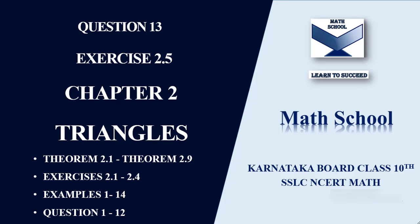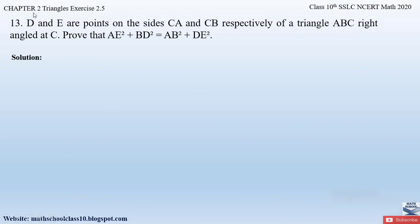Now let us begin. Question number 13 from exercise 2.5, chapter 2 Triangles states: D and E are points on the sides CA and CB respectively of a triangle ABC, right-angled at C. Prove that AE² + BD² = AB² + DE².